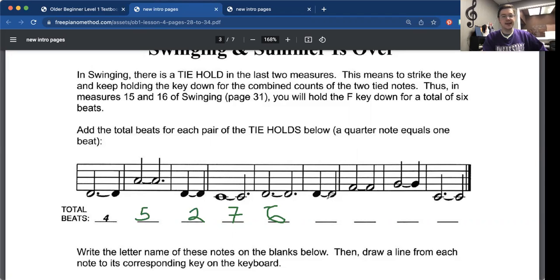Quarter note plus half note. One plus two would be three. Half note plus half note. Two beats plus two beats would be four. Half note plus quarter note. Two beats plus one beat would be three. And then dotted half note plus half note. Three beats plus two beats would be five right there.